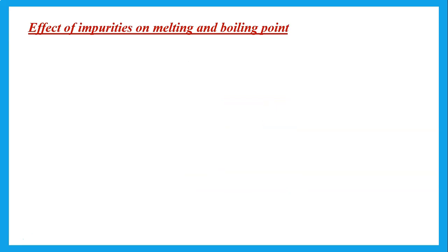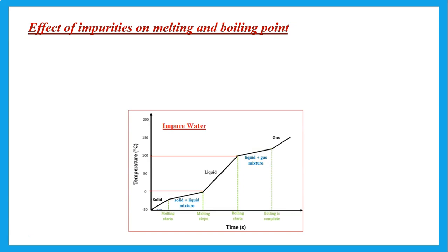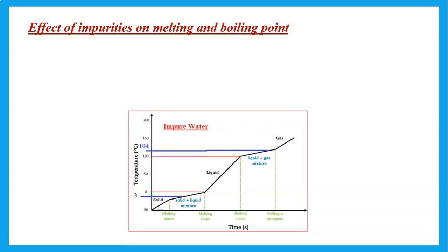What is the effect of the presence of impurities on the melting point and boiling point? If the substance is pure it has a sharp melting point and a sharp boiling point. But if it is impure, it will start to melt or boil over a range — not a sharp point. For a solid, the presence of impurities will cause it to melt at a lower temperature than it should. For example, pure ice melts at zero, but if the ice has some salt in it, it will melt at a lower temperature than the normal melting point.